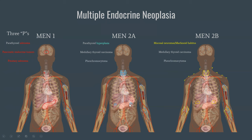For MEN2A: pheochromocytomas — tumors of the adrenal gland — diffuse parathyroid hyperplasia more commonly than an adenoma, and medullary thyroid cancer, which is why the whole thyroid gland is highlighted. For MEN2B: mucosal neuromas appearing as lesions on the skin, features of marfanoid habitus with hyperelastic skin and joints, and pheochromocytomas. This summary slide is a good visual way to keep these separate in your head.